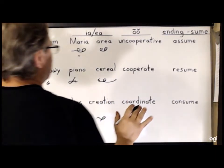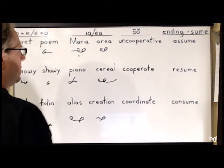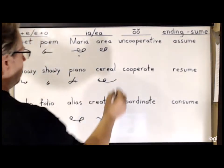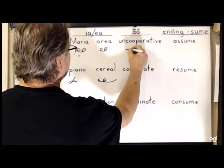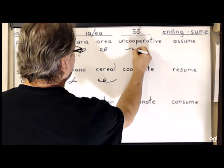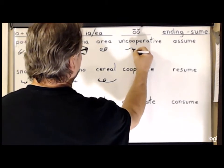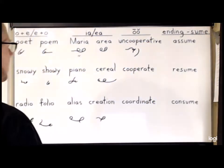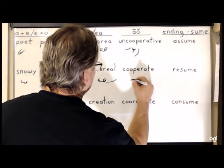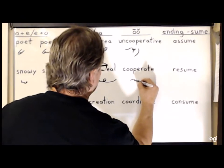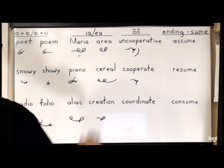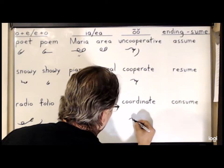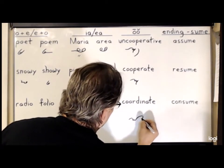Next, we move to the combination of long O and short O sounds, like in 'uncooperative', 'cooperate', and 'coordinate'. For 'uncooperative', we'll write N for the 'un' sound, then K, then O, another O, a P, and then a separate V for the '-ative' sound. For 'cooperate', simply K-O-O-P as an abbreviated form. For 'coordinate', it is K-O, the D-E-N stroke, the A, and then T.